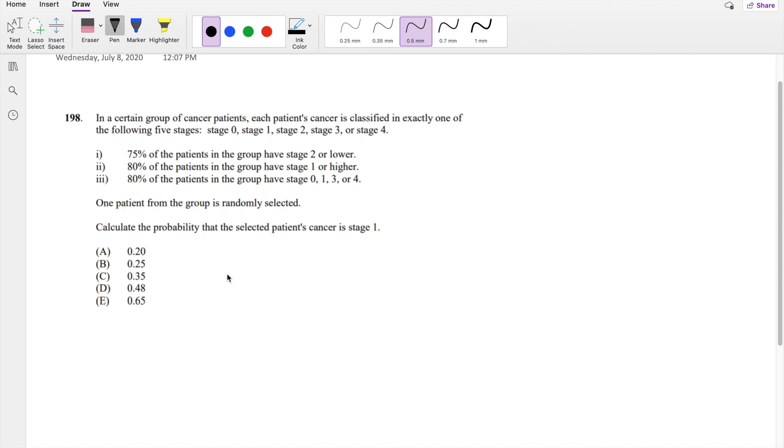Condition 1 says 75% of the patients is stage 2 or lower. So stage 2, stage 1, or stage 0 with a probability of 0.75. This part is saying 80% of the patients in the group have stage 1 or higher. So stage 1 plus stage 2 plus stage 3 plus stage 4 is equal to 0.8.